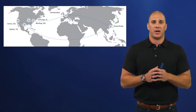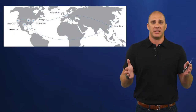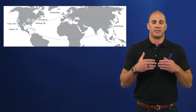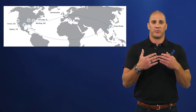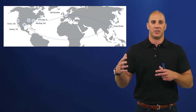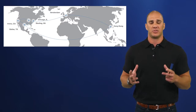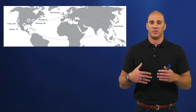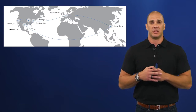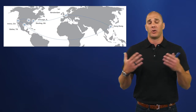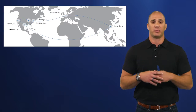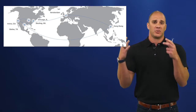Proximity to the data center is key — latency is one of the biggest factors causing performance degradation for a customer. What we've done at Rapid Scale is build out geographically dispersed data centers across the United States, so no matter where the customer is, we have a data center close enough to provide sub-30 milliseconds of latency, enabling high-level performance.